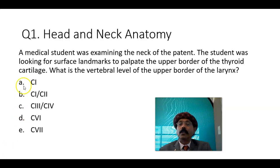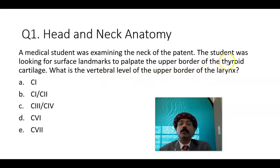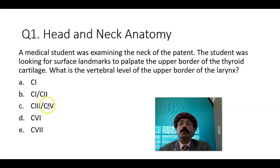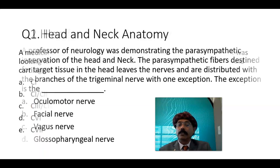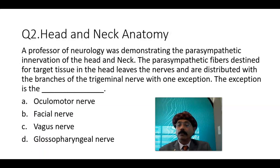The answer is C — the upper border of the larynx, that is the upper border of the thyroid cartilage, lies between cervical vertebra 3 and the upper border of cervical vertebra 4. Now we will go to the second question.